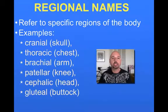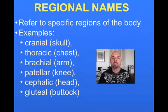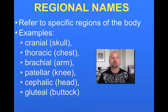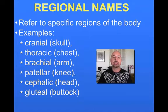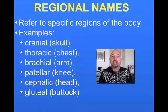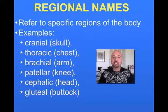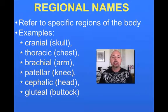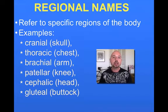We talked about words like superior and inferior, proximal, distal, medial, and lateral last time. Now let's talk about some specific regions of the body. If we're talking about the skull, we're talking about the cranial region. The chest is the thoracic region. The arm is the brachial region. The knee is the patellar region. The head is the cephalic region. And when we talk about the buttocks, we're talking about the gluteal region. These are just some of the regions we'll be looking at when we do dissections and when we're talking about human anatomy and physiology later this year.